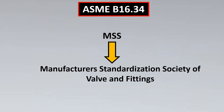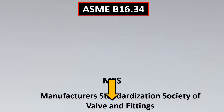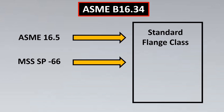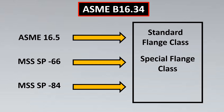There is something called MSS — Manufacturers Standardization Society of Valves and Fittings. The MSS standards and the ASME standards had to be consolidated because many engineers were following MSS standards while others followed ASME standards. So ASME B16.34 basically combined B16.5 (called the Standard Flange Class), MSS SP-66 (the Special Flange Class), and MSS SP-84 (the Limited Flange Class) all under one umbrella.